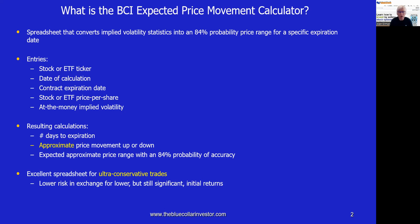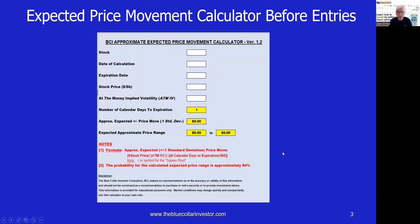This is a particularly excellent spreadsheet when we're using ultra-conservative trades, and I'm going to give you some examples of which type of trades this would be particularly useful for. It will lower our risk significantly — the risk factor is approximately only 16% with an 84% probability of success. Lowering our risk is in exchange for lower premiums or lower returns, but let me add: lower but still significant.